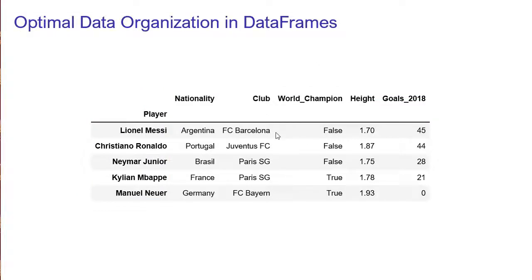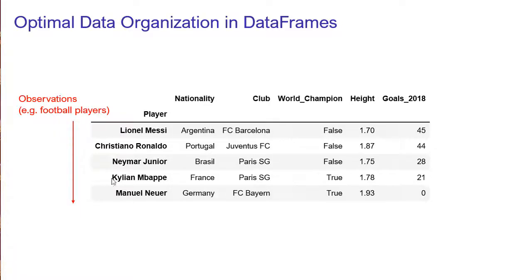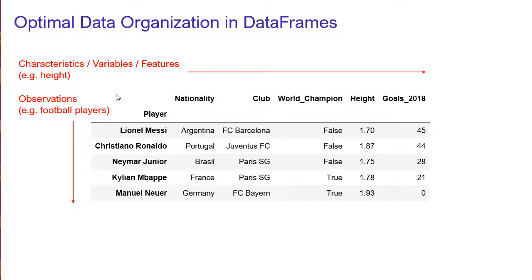Pandas is designed with an optimal data organization in mind. We have observations as rows — for example, each football player is an observation — and in the columns we have the characteristics of the observations, which we can also call variables or features. For example, the height of a football player is a characteristic or feature of the players.